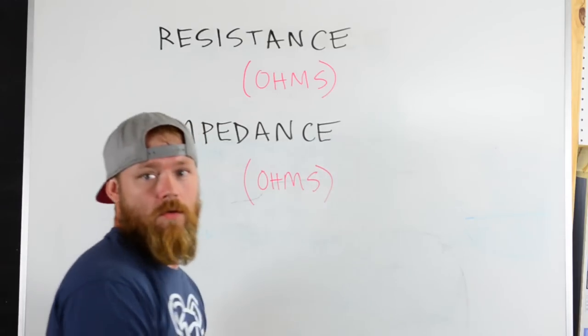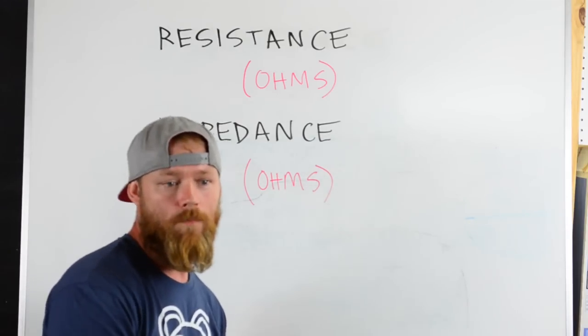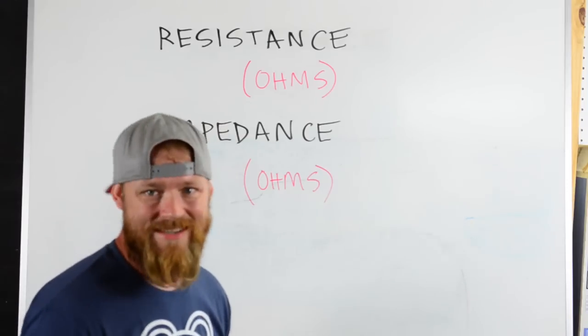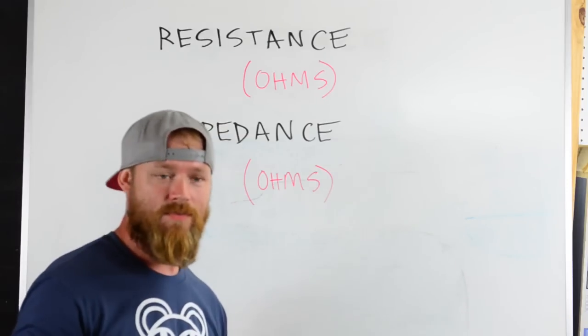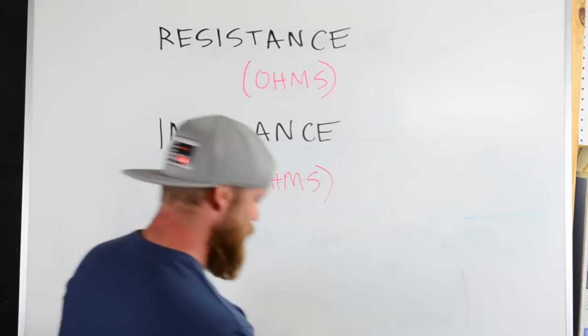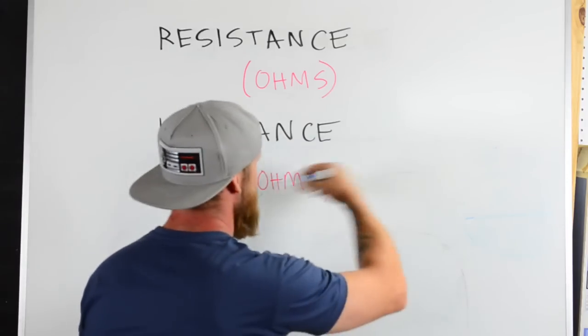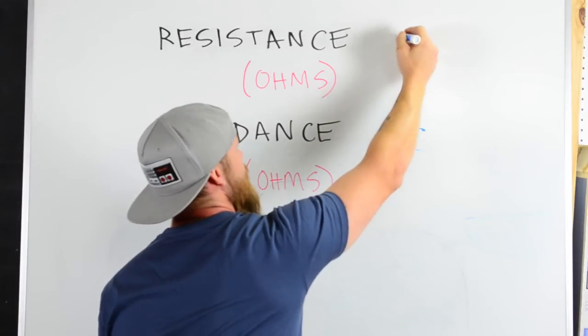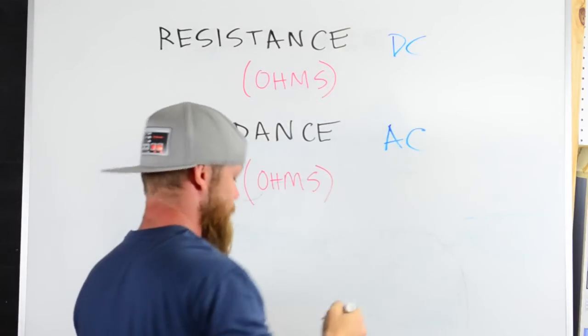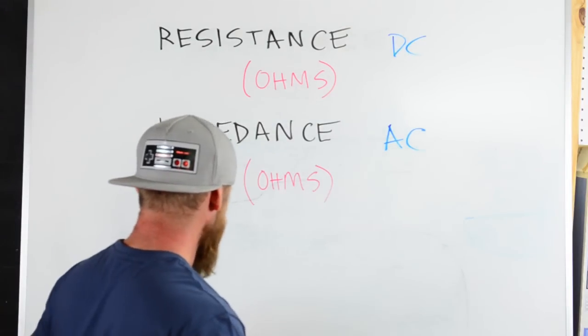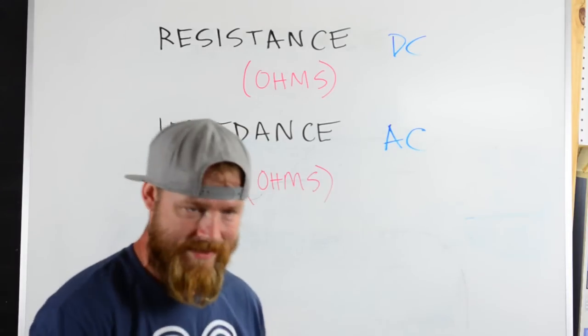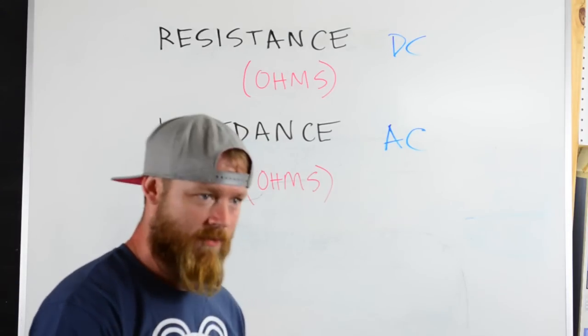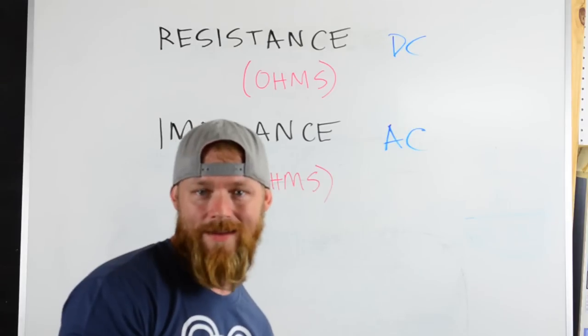Alright, so resistance. The difference between resistance and impedance really is one is talking about AC and one is talking about DC. So with impedance you're talking about AC electricity, and with resistance you're talking about DC. So what is resistance? I'm just going to use the word resistance for a while before I start getting into the difficulty behind impedance.